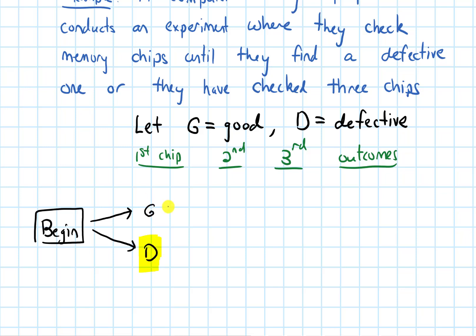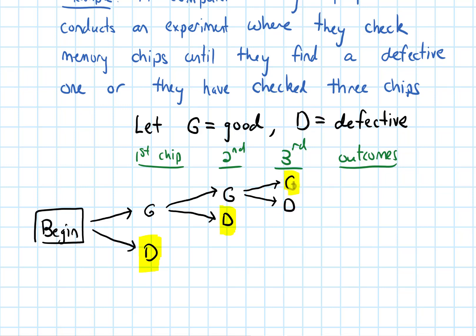If the second chip is defective, we stop. If it's good, we draw two more branches for a third chip — either good or defective. Because we've checked three chips, in both of those cases we stop. So our outcomes are: GGG (all three good), GGD (two good then defective), GD (good then defective), and D (first chip defective).